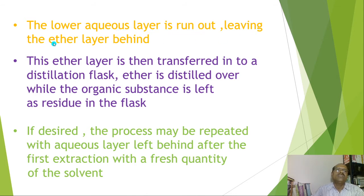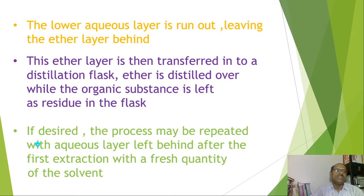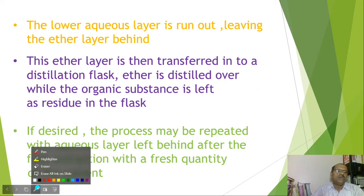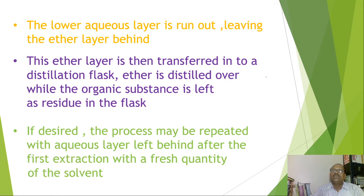The lower aqueous layer is run out, leaving the ether layer behind. This ether layer is then transferred into a distillation flask, where ether is distilled over while the organic substance is left as a residue in the flask. If desired, the process may be repeated with the aqueous layer left behind after the first extraction, using a fresh quantity of solvent. In this way, we are doing the separation of organic substance with the help of a separatory funnel.